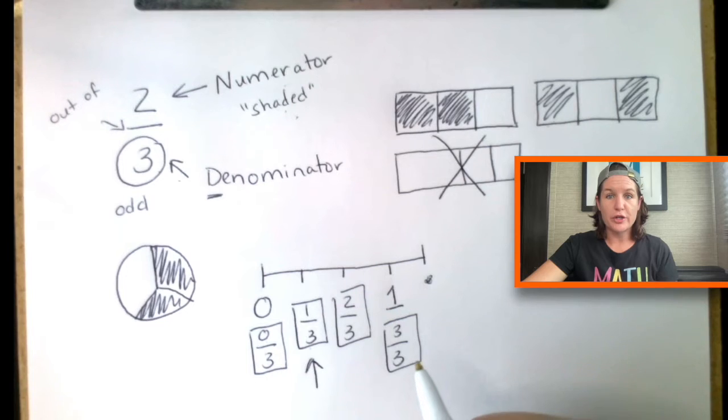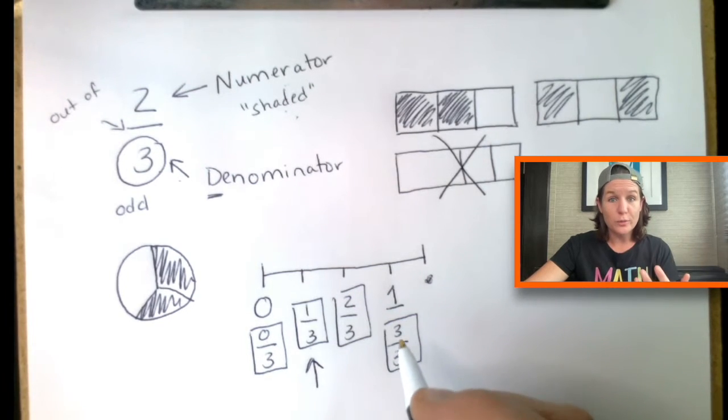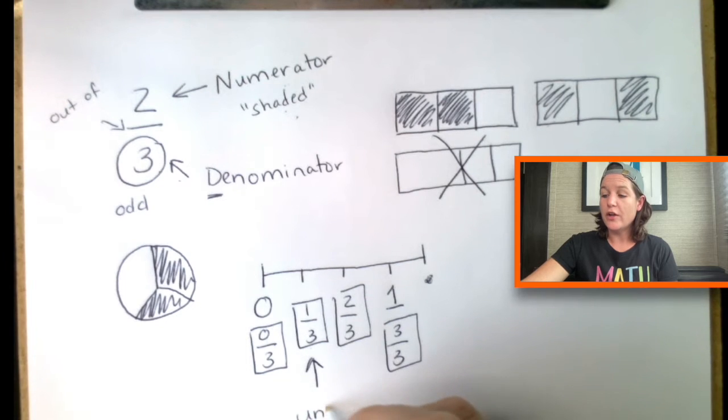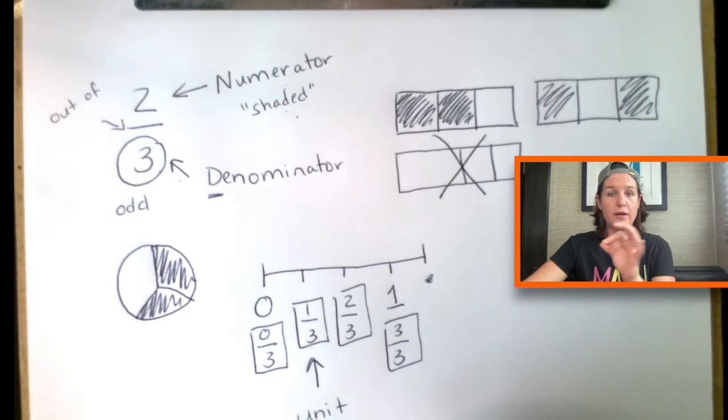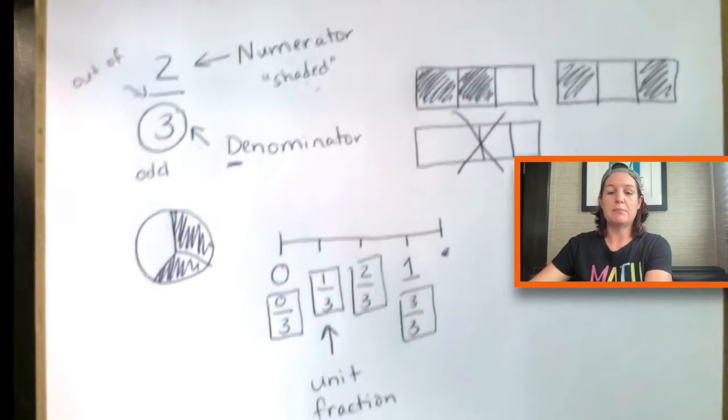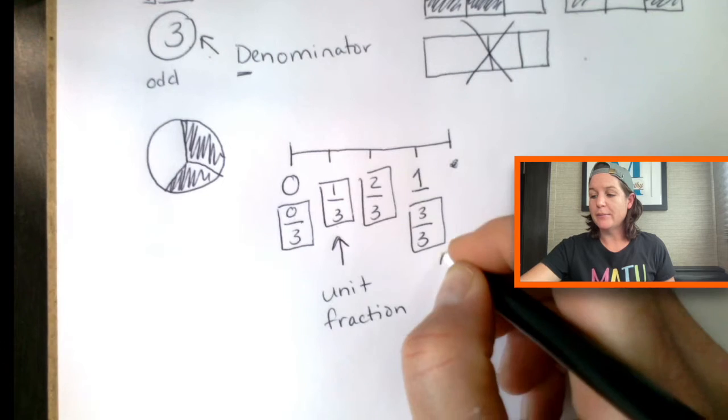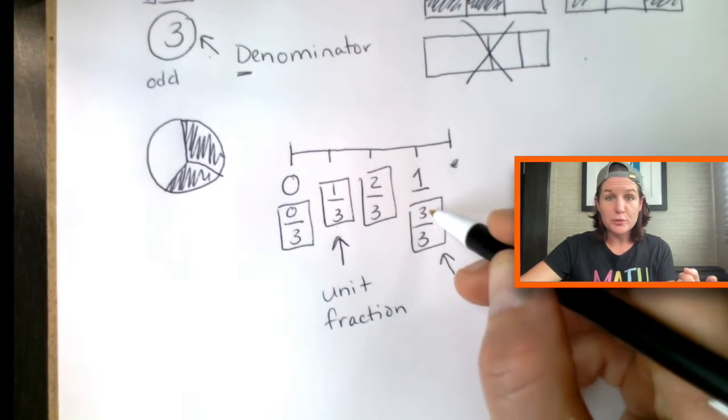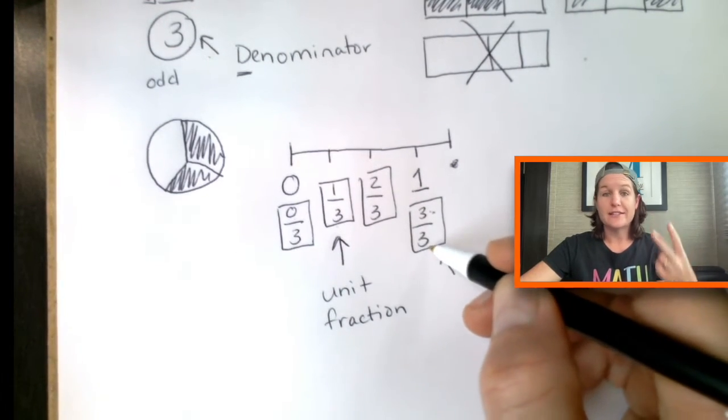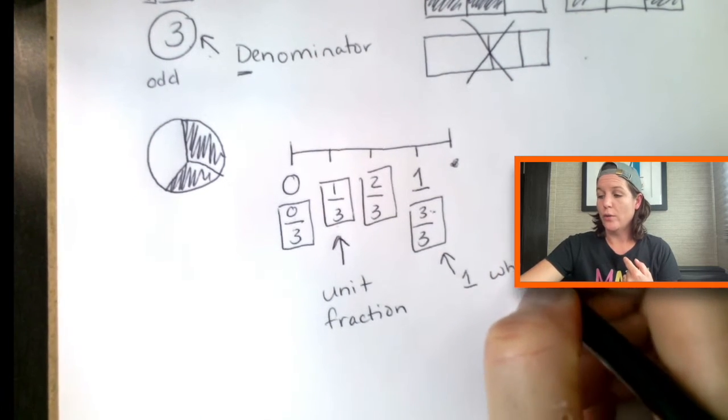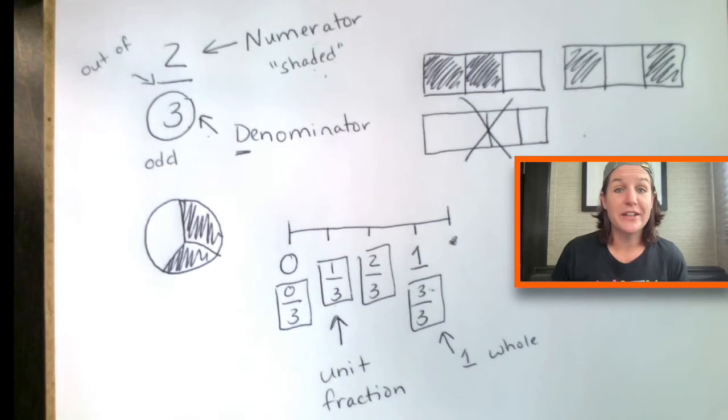Now, let's talk about one third. You see how that one is in the numerator? Whenever you have a one in the numerator, we call this a unit fraction. It's just one piece of a fraction. And then over here, any time that we have the same number in the numerator as in the denominator, it equals one whole.